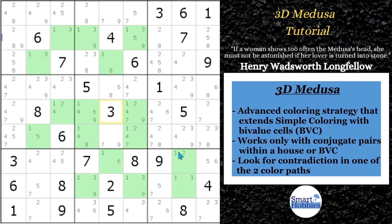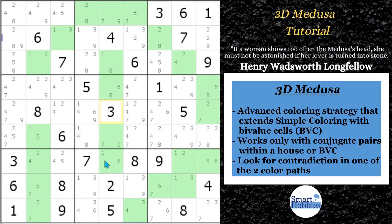Conjugate pairs also apply to bi-value cells. Filtering on all the bi-value cells: in this same cell, the one is also a conjugate pair with the six, because if this is not a one, that would be a six. So they always work together.